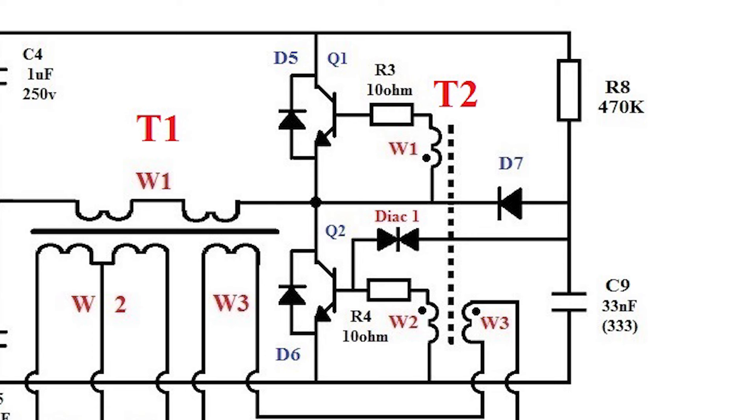The difference in resistance between resistors R3 and R4 should not exceed 0.2 ohms.